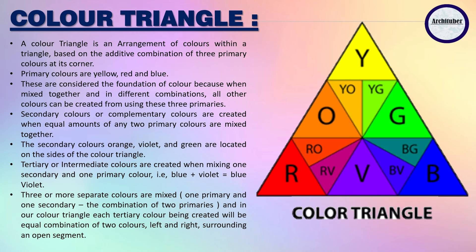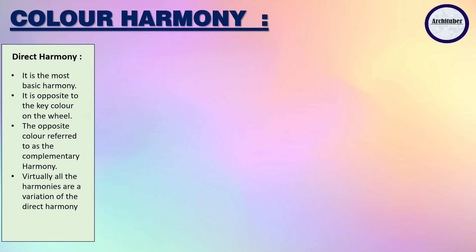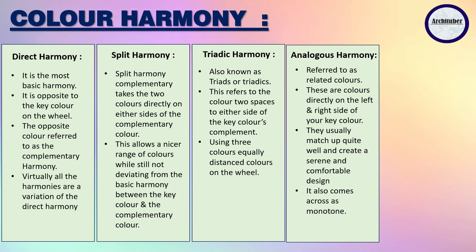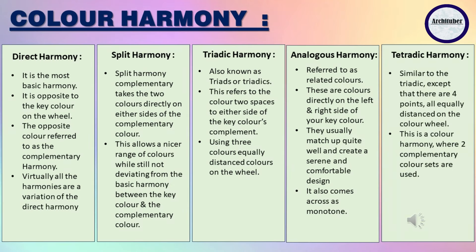There are five basic harmonies of colors. Direct harmony is the basic harmony opposite to the key color on the wheel — also referred to as complementary harmony. Split harmony takes two colors directly on either side of the complementary color. Triadic colors use three colors equally distant on the wheel. Analogous harmony uses colors directly to the left and right of your key color, also called monotone color. Tetradic colors are similar to triadic but use four equally distant colors on the color wheel.